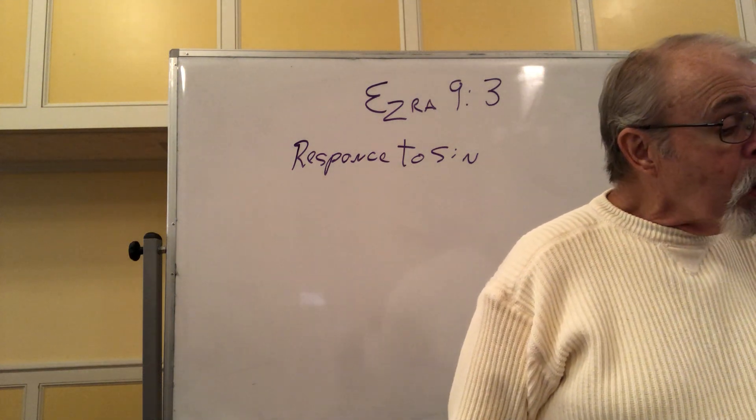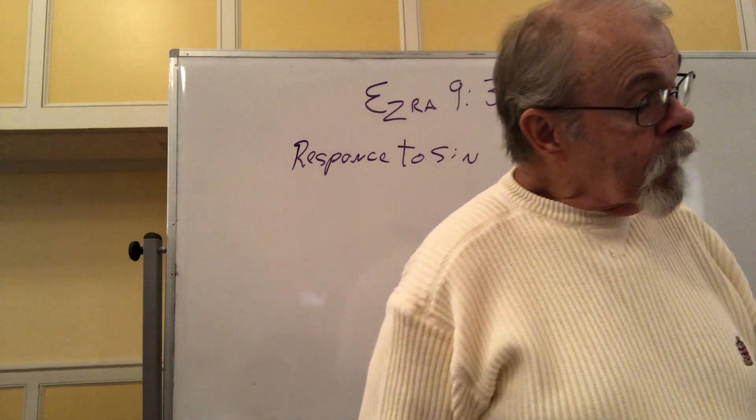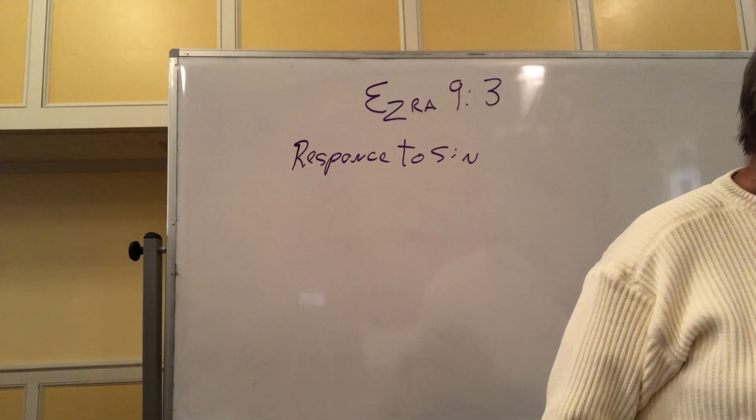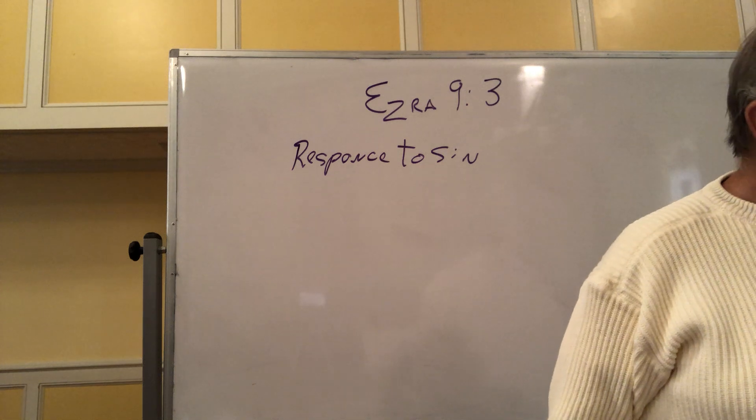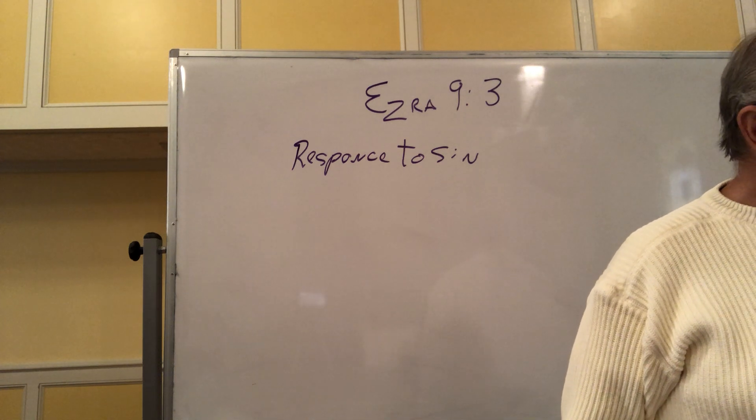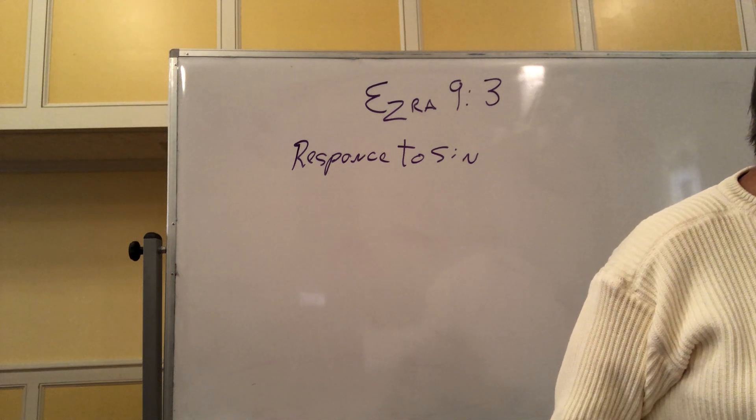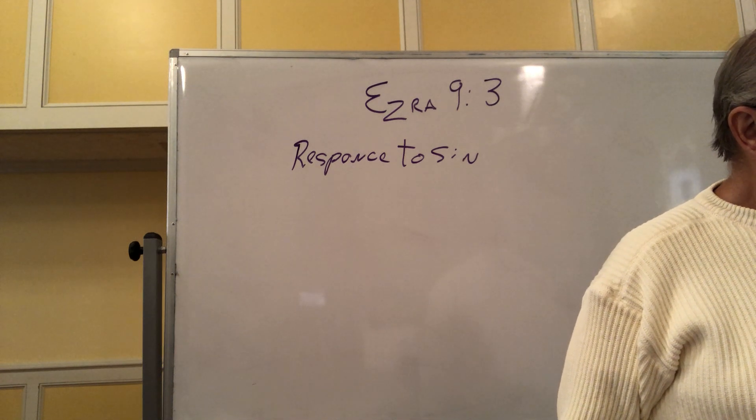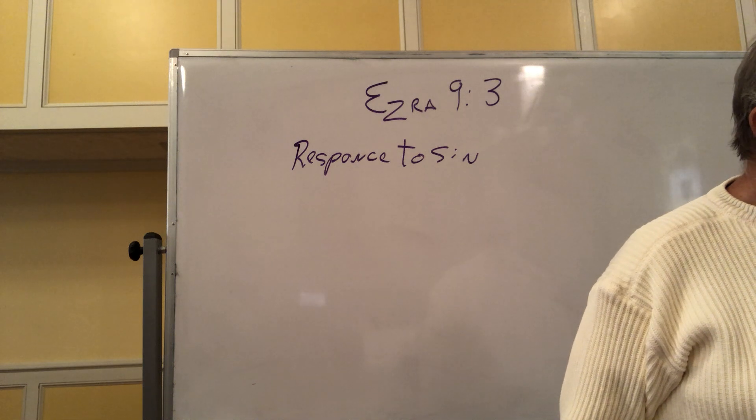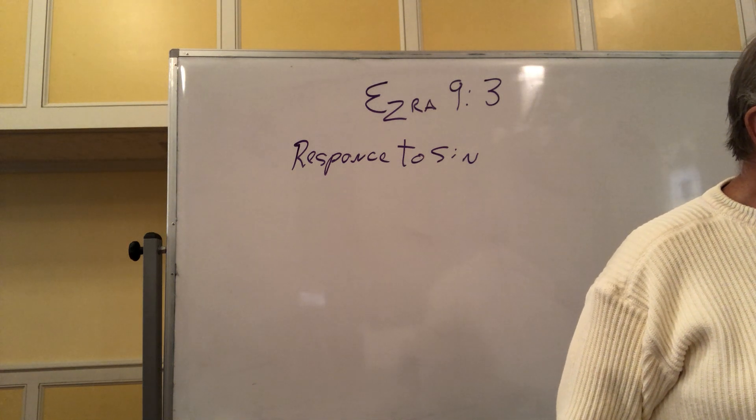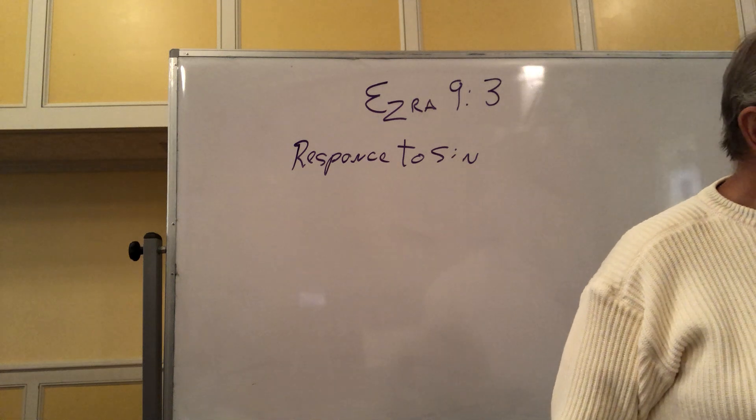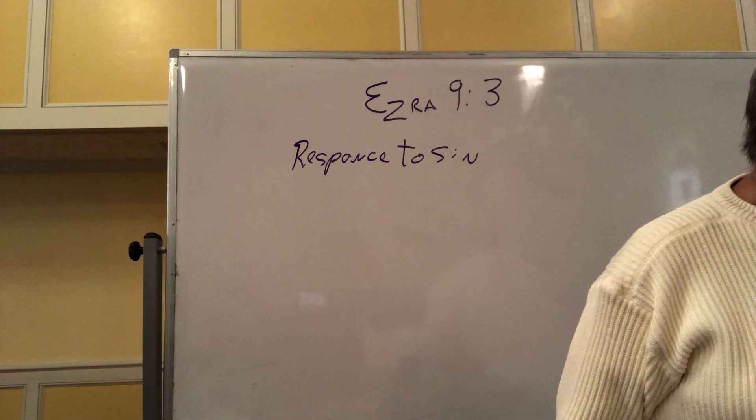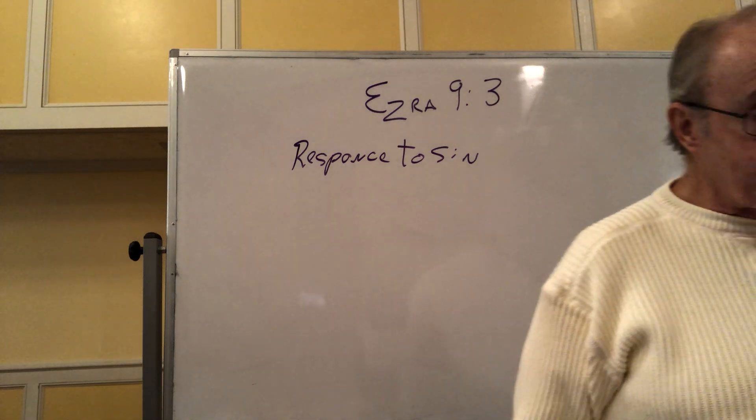New International Version, of course, where after Ezra heard this, verse 3 of chapter 9: When I heard this, I tore my tunic and cloak, pulled hair from my head and beard, and sat down appalled. Then everyone who trembled at the words of the God of Israel gathered around me because of this unfaithfulness of the exiles. And I sat there appalled until the evening sacrifice.